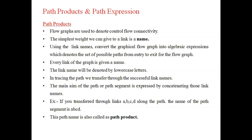A path segment is expressed by connecting or concatenating all link names together. For example, taking a link called ABCD along the path, the name of that path segment is ABCD. Without commas, ABCD is represented as a path segment. This path name is also called the path product — the path product is nothing but the name of that particular path.